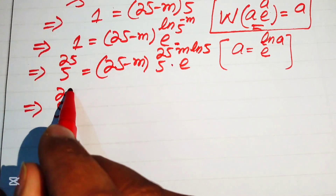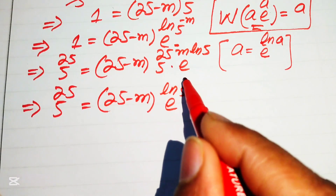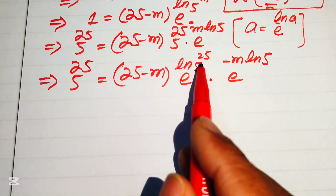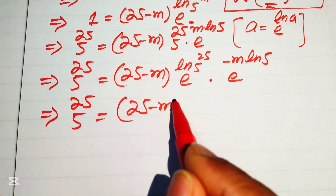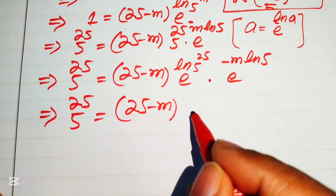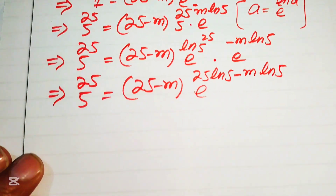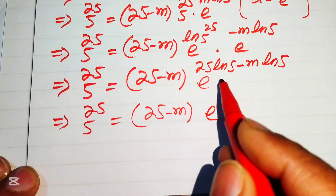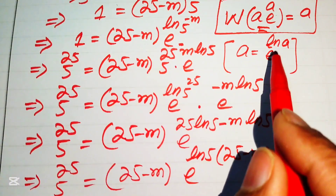We rewrite 5^25 as e^(25·log 5), so the right-hand side becomes (25 minus m) times e^(25·log5) times e^(−m·log5). Since the bases are the same, we add the exponents, giving (25 minus m) times e^((25−m)·log5). Taking log 5 as a common factor from the exponent: (25 minus m) times e^(log5·(25−m)).